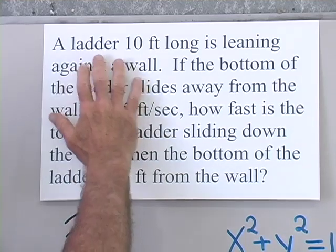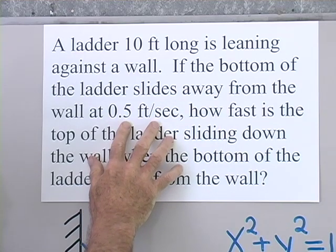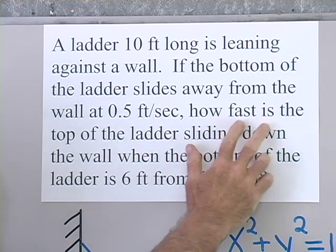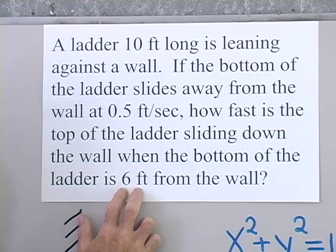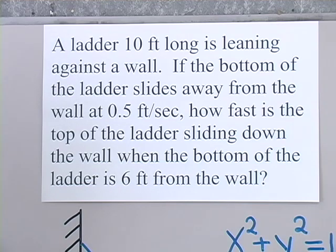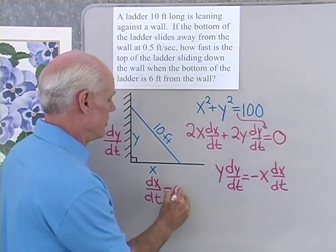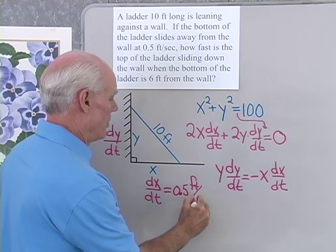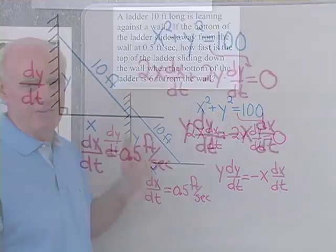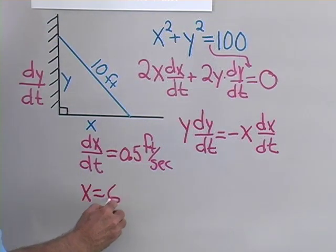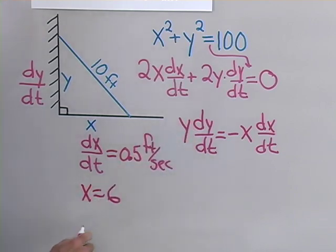Let me read the problem again. A ladder 10 feet long is leaning against a wall. The bottom of the ladder slides away from the wall at 0.5 feet per second — that gives me dx/dt. How fast is the top of the ladder sliding down the wall? That means I want dy/dt when the bottom of the ladder is 6 feet from the wall. Six feet from the wall is the distance x. So dx/dt is a constant 0.5 feet per second, and I'm interested in dy/dt when x equals 6. I have x, I have dx/dt, I'm looking for dy/dt — I need to find y.